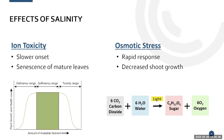Ion toxicity isn't seen quite as much, because in a normal agricultural salinity situation, you don't have sodium and chloride as concentrated as you do in a brine spill. So ion toxicity is less common in agricultural salinity, but very apparent in brine spill situations. It has a slower onset than osmotic stress — those ions start to build up in the older leaves, causing them to senesce, meaning they start to decompose or become chlorotic and necrotic.